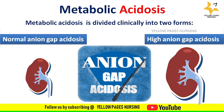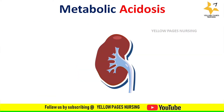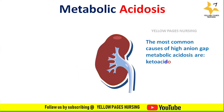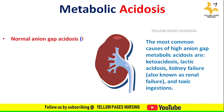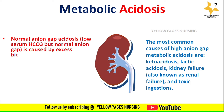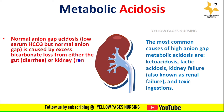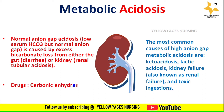The most common causes of high anion gap metabolic acidosis are ketoacidosis, lactic acidosis, kidney failure (also known as renal failure), and toxic ingestions. Normal anion gap acidosis — low serum bicarbonate but normal anion gap — is caused by excess bicarbonate loss from either the gut due to diarrhea, or the kidney due to renal tubular acidosis. It is also caused by drugs like carbonic anhydrase inhibitors.